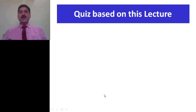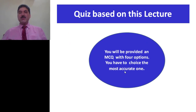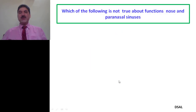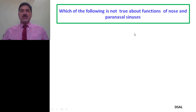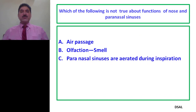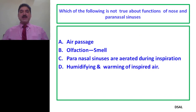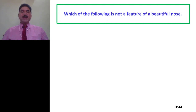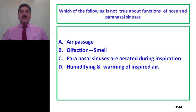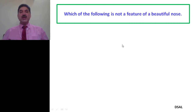Now let us go for a quiz based on this lecture. You will be provided an MCQ with four options; choose the most accurate one. First question: which of the following is NOT true about functions of nose and paranasal sinuses? A. They act as passage of air. B. Nose performs the function of smell. C. Paranasal sinuses are aerated during inspiration. D. Paranasal sinuses humidify and warm the inspired air. Choice C is wrong — the correct answer is that paranasal sinuses are aerated during expiration, not during inspiration.